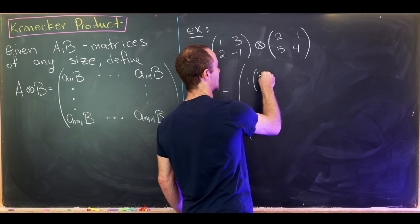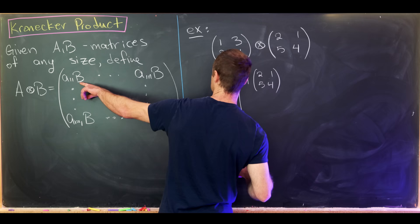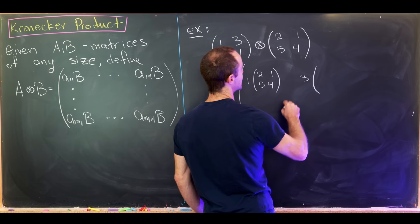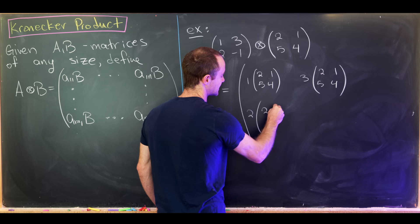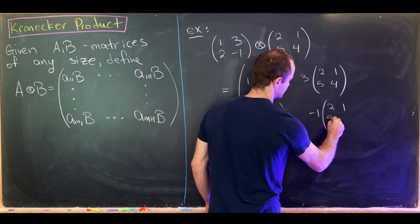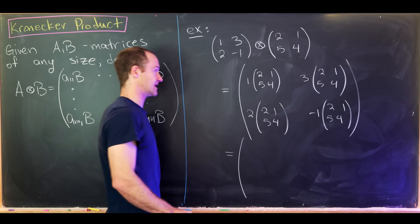The upper-right block will be 3 times [[2, 1], [5, 4]], the lower-left block will be 2 times [[2, 1], [5, 4]], and the lower-right block will be -1 times [[2, 1], [5, 4]]. Now we can expand this out without too much difficulty.